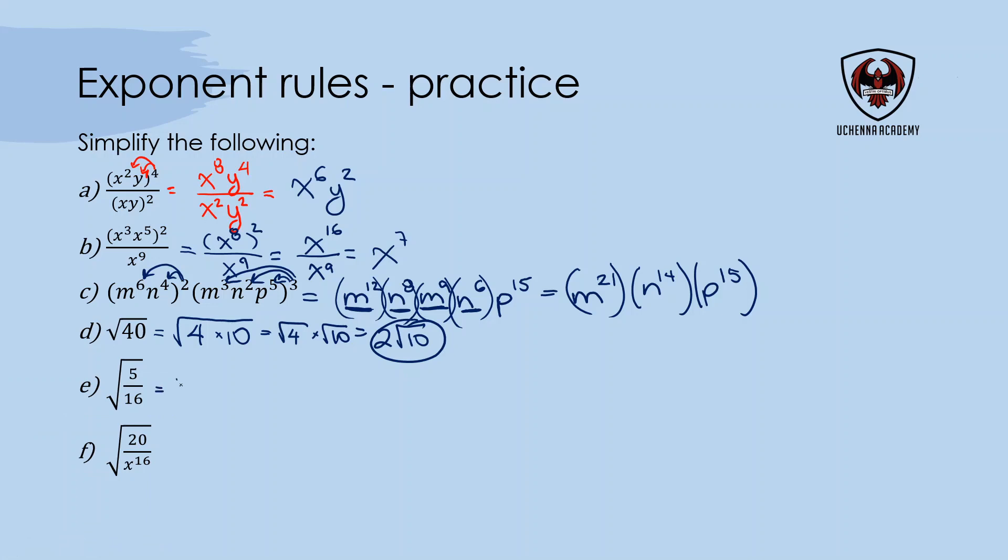For E, we've got division, so I can say this is square root of 5 over square root of 16. I can apply the square root to numerator and denominator separately. Square root of 5 stays, but square root of 16 is 4. That looks much cleaner.